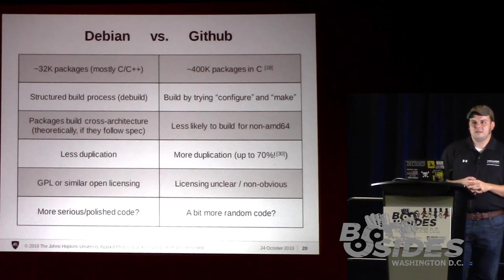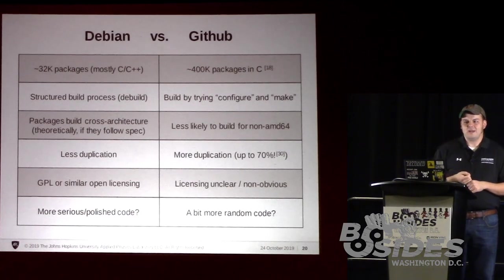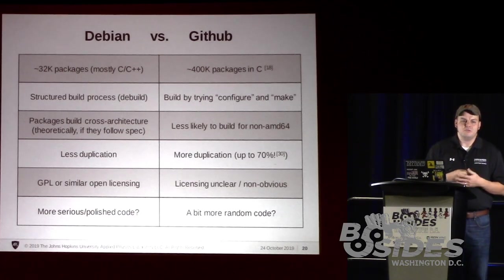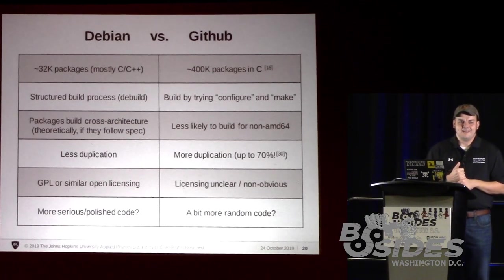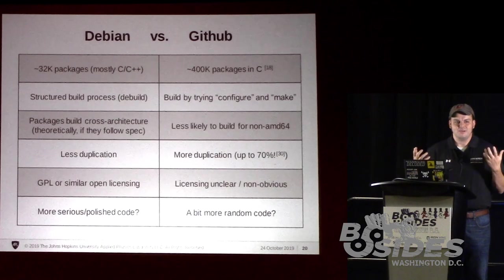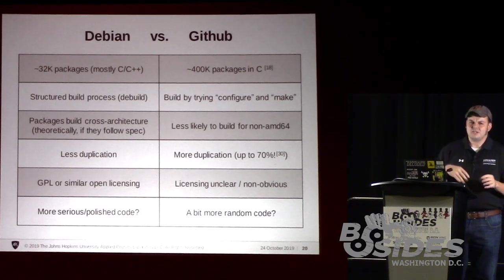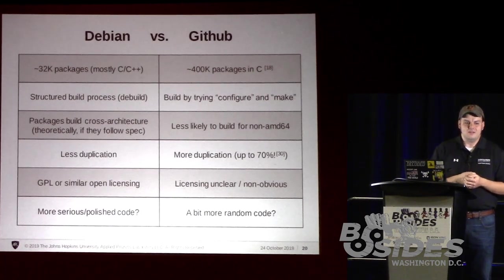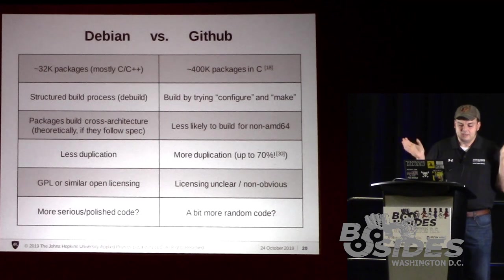There's also a licensing problem with GitHub. You can label your project with a license, but if you don't choose to label it — and a lot of them aren't labeled — how you share it legally is not obvious. A lot of people are sharing datasets from GitHub that are just code or fragments of code. The cool part is with Debian it's all GPL, so we can build it all, share those binaries, publish those binaries, and legally it's all good. I'd also like to think Debian code is a little bit more polished on average.